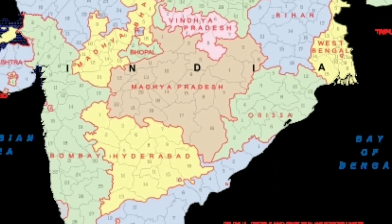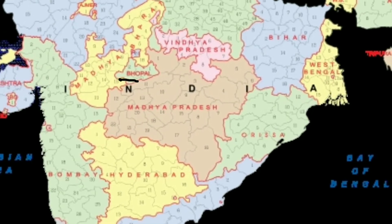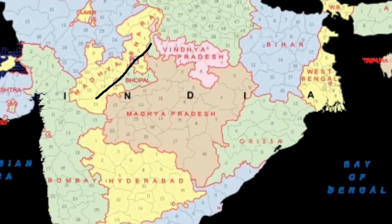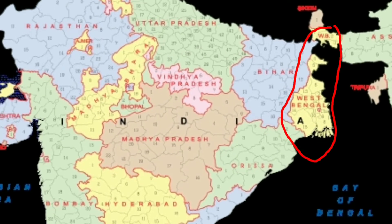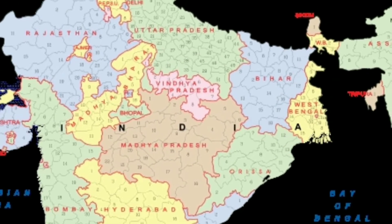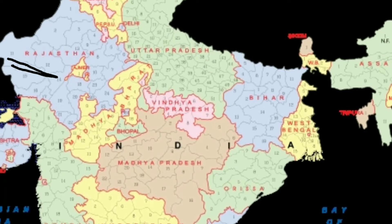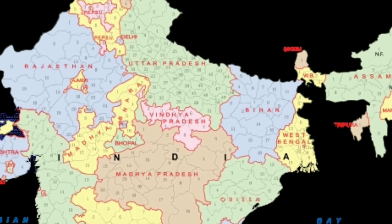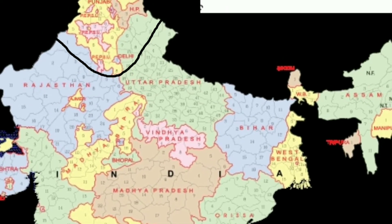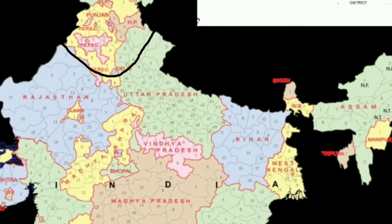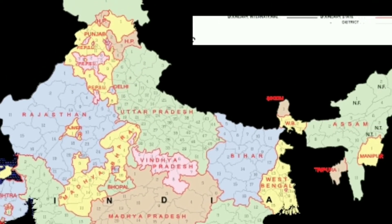Gujarat was divided as Saurashtra and Kutch. Bhopal, Madhya Bharat, Vindhya Pradesh, Bihar, West Bengal, Uttar Pradesh, Rajasthan, Ajmer. In the extreme north: Delhi, Punjab, Himachal Pradesh, and Jammu Kashmir.